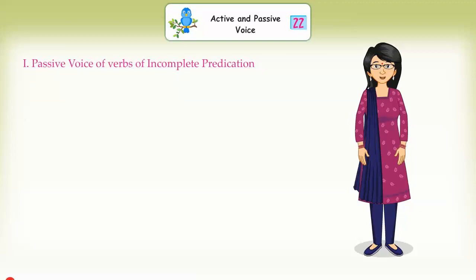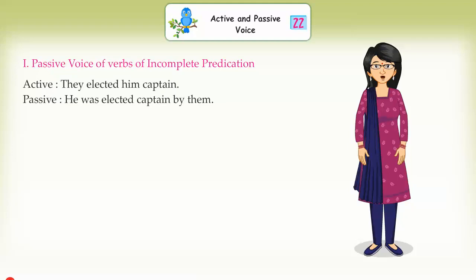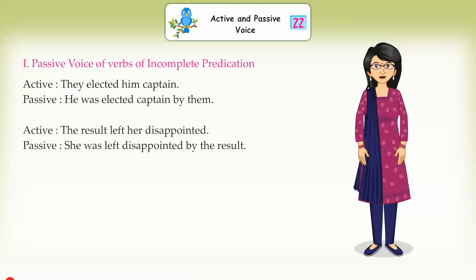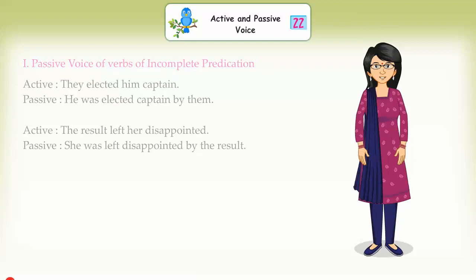Passive voice of verbs of incomplete predication. Active: 'They elected him captain.' Passive: 'He was elected captain by them.' Active: 'The result left her disappointed.' Passive: 'She was left disappointed by the result.'